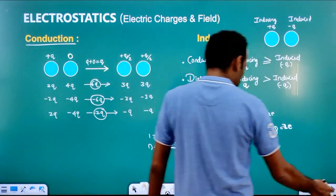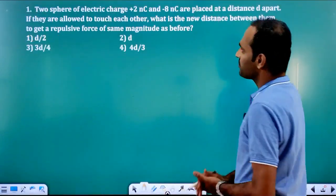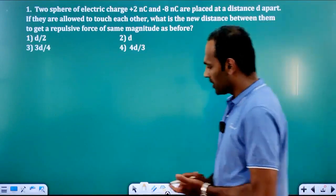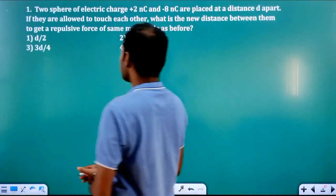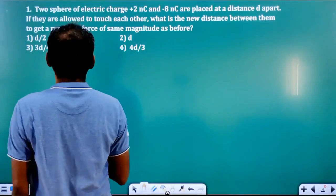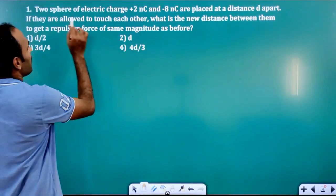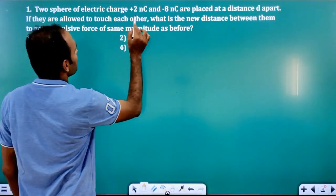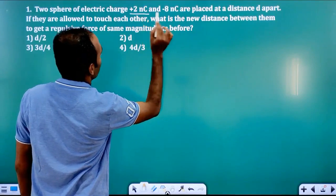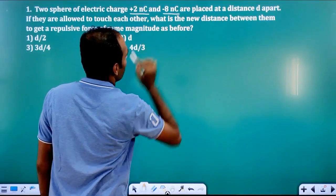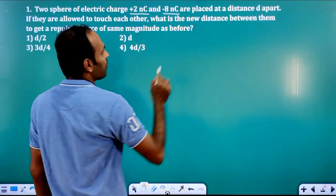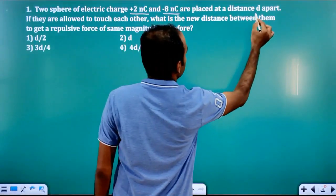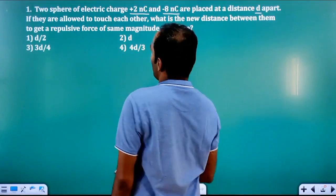We will apply these concepts and solve some MCQs. In the first question, two spheres of electric charge plus 2 nanocoulomb and minus 8 nanocoulomb are placed at a distance D apart.